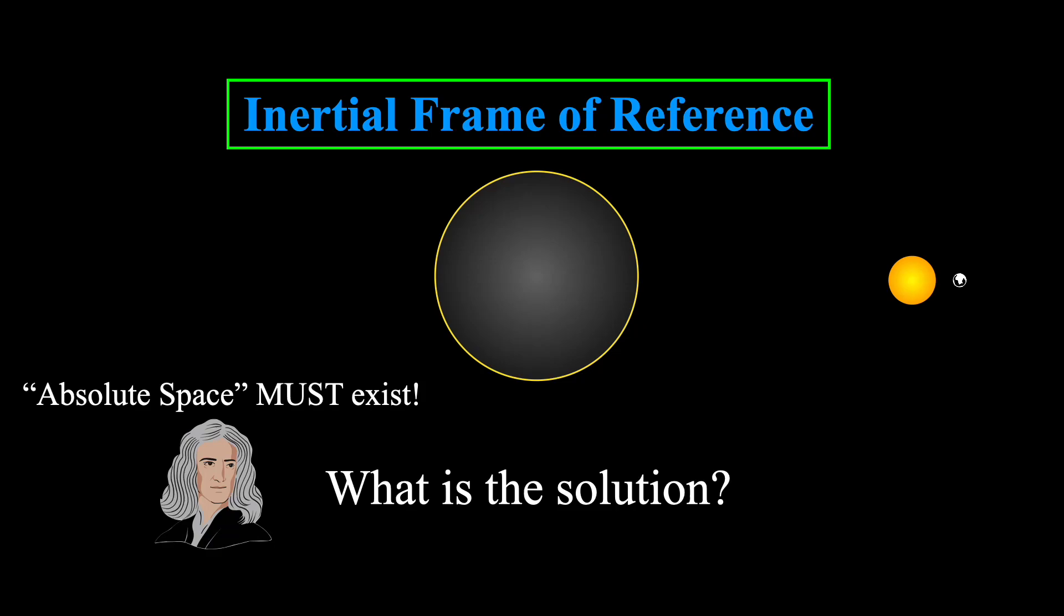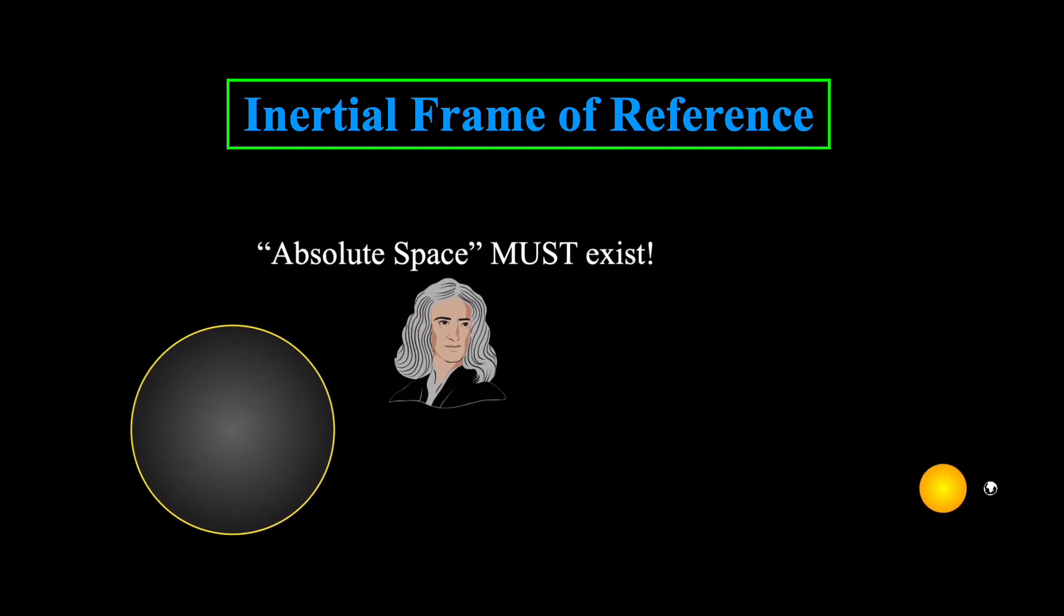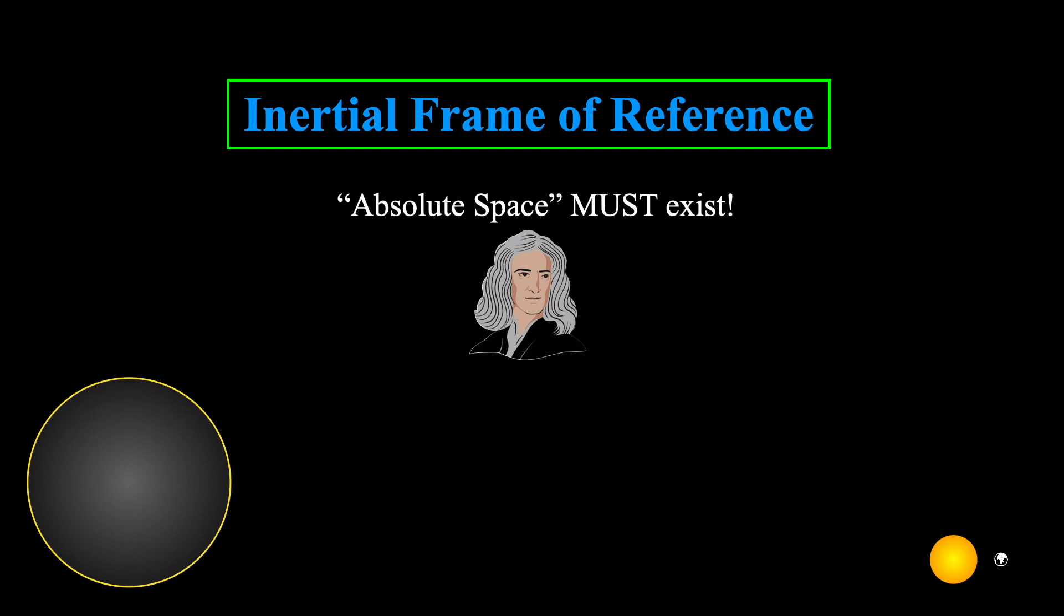And although we can't see absolute space, Newton gave some very interesting arguments as to why he thinks we must posit it in order to make any sense of motion. Unsurprisingly, most physicists do not find his arguments compelling, and the situation only becomes more difficult when considering the development of Einstein's relativity theory.